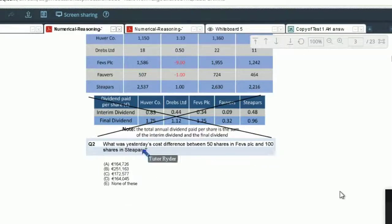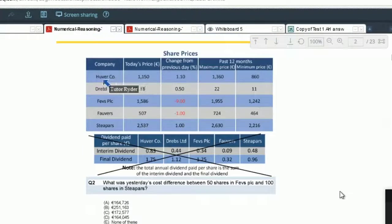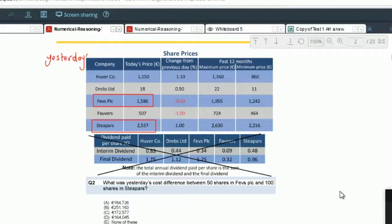In this case, it is comparing yesterday's cost for two different companies. So what we've got straight away is a problem because this is today's price. So we've got to use the change from the previous day to bounce us back to yesterday's price. So that is quite a technical question - it's called a reverse percentage question.